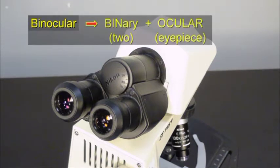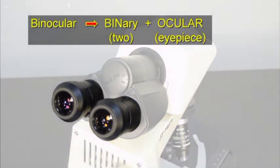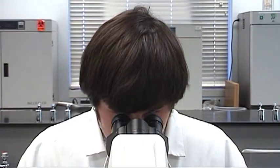Binocular is a shortened term for binary ocular, which refers to the two eyepieces called oculars. This feature allows you to observe a specimen with both eyes.